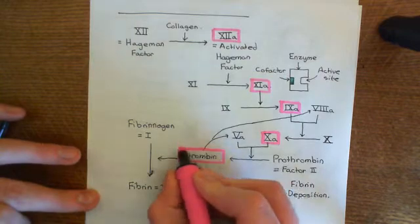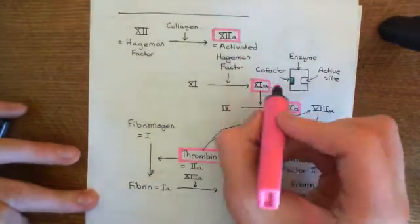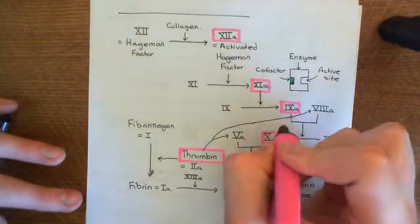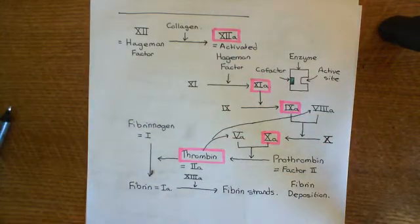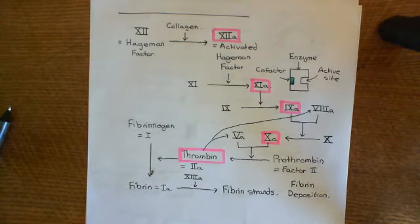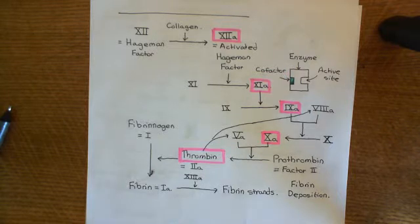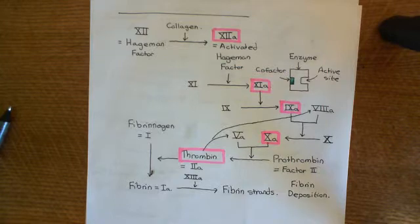And finally, antithrombin-III inactivates thrombin. So it actually inactivates every single step of the intrinsic coagulation pathway and stops it from happening, ultimately stopping the conversion of fibrinogen into fibrin.